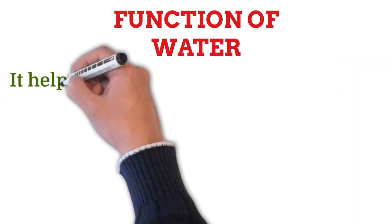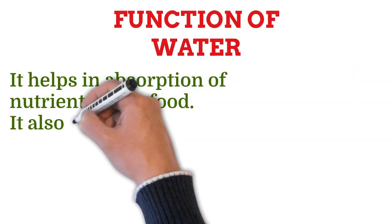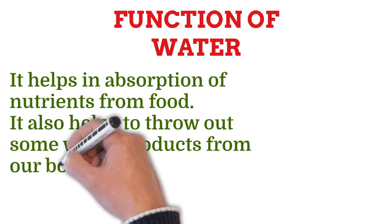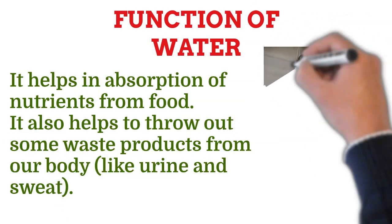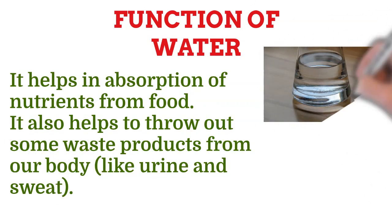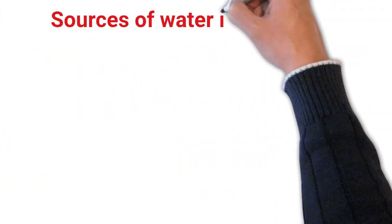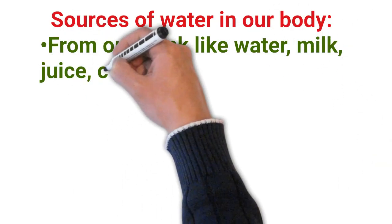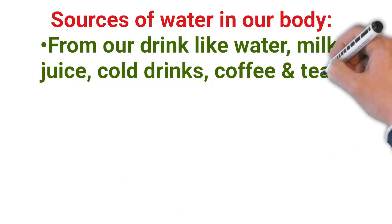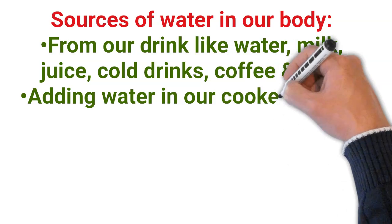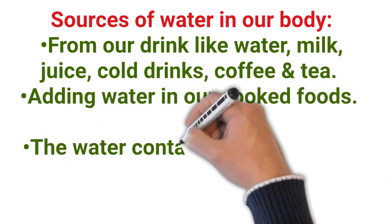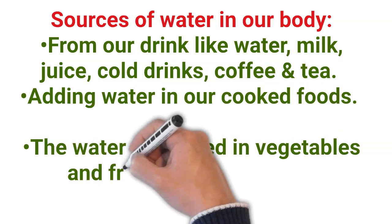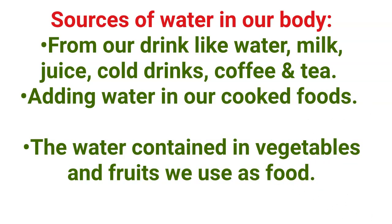Functions of water: it helps in absorption of nutrients from our food, and it also helps to throw out some waste products from our body like urine and sweat. Sources of water in our body include water, milk, juice, cold drinks, coffee, and tea, as well as water added in cooked foods and the water contained in vegetables and fruits we use as food.